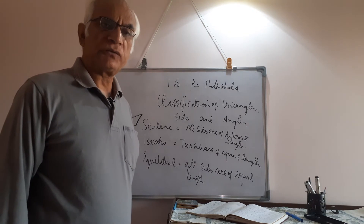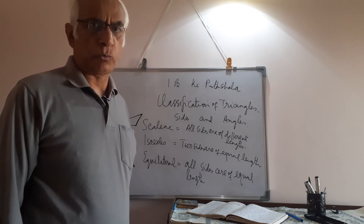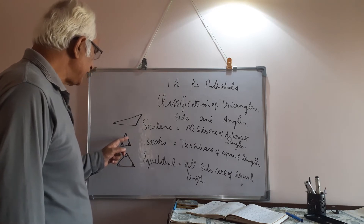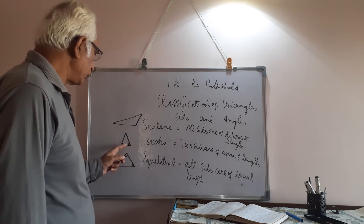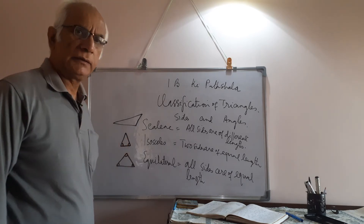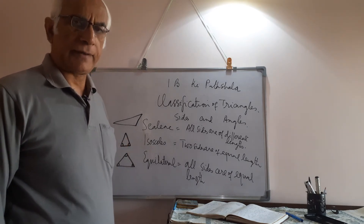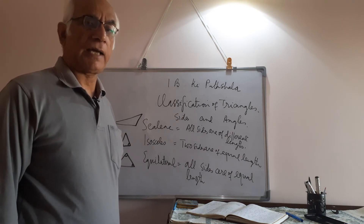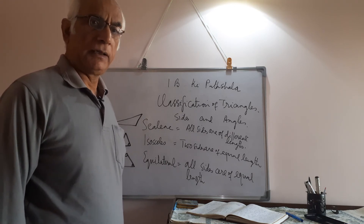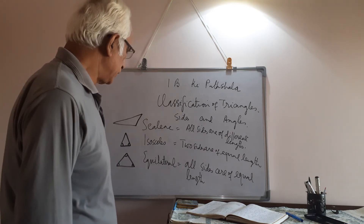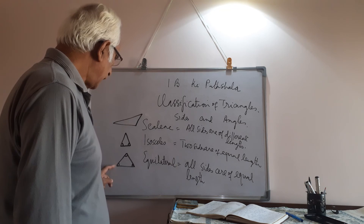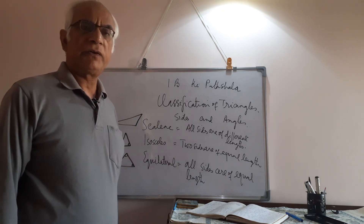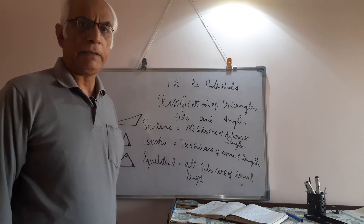In an isosceles triangle, two out of three sides are equal, and the angles opposite to these equal sides are also equal. In an equilateral triangle, all three sides are of the same length, all three sides are equal, and all angles are also equal — they are of 60 degrees each.